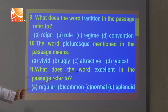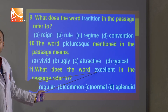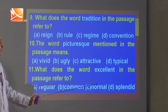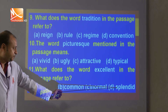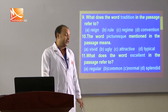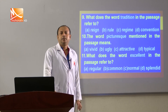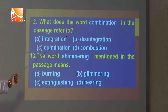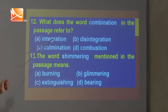Question 11: What does the word 'excellent' in the passage refer to? Among the options — regular, common, normal, or splendid — excellent means splendid. So 'splendid' is the correct answer. Question 12: What does the word 'combination' in the passage refer to? Combination means integration. So 'integration' is the correct option.